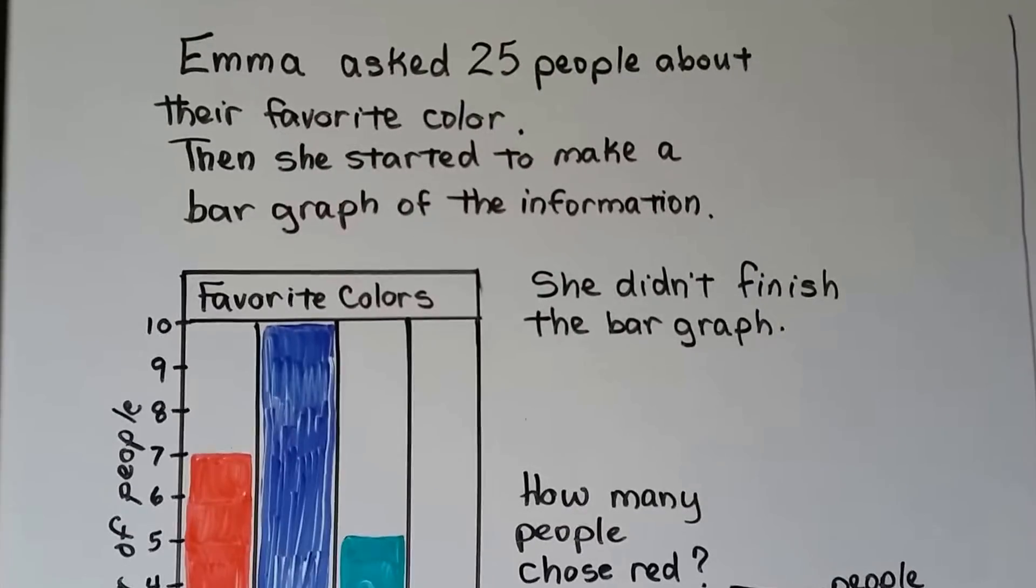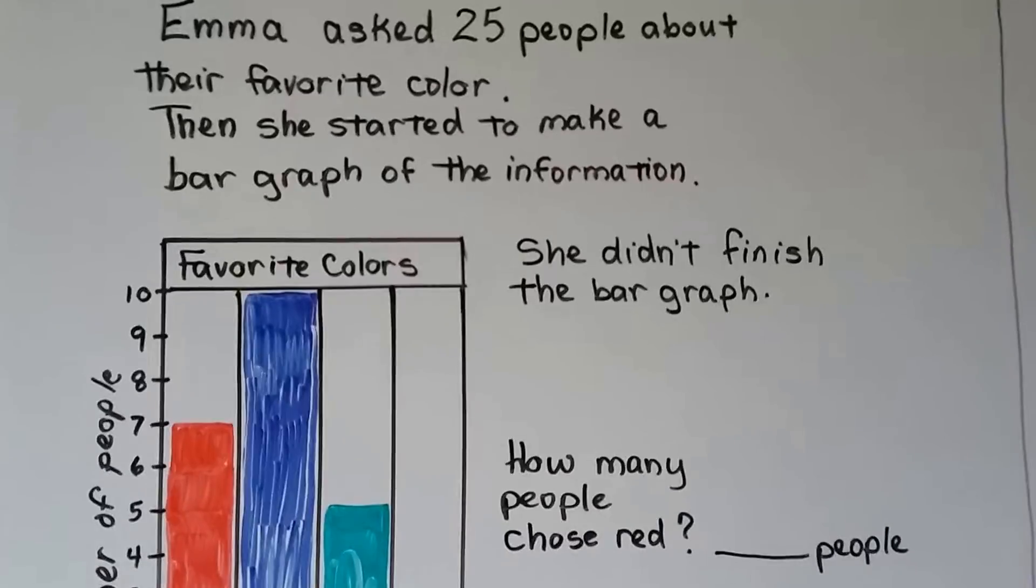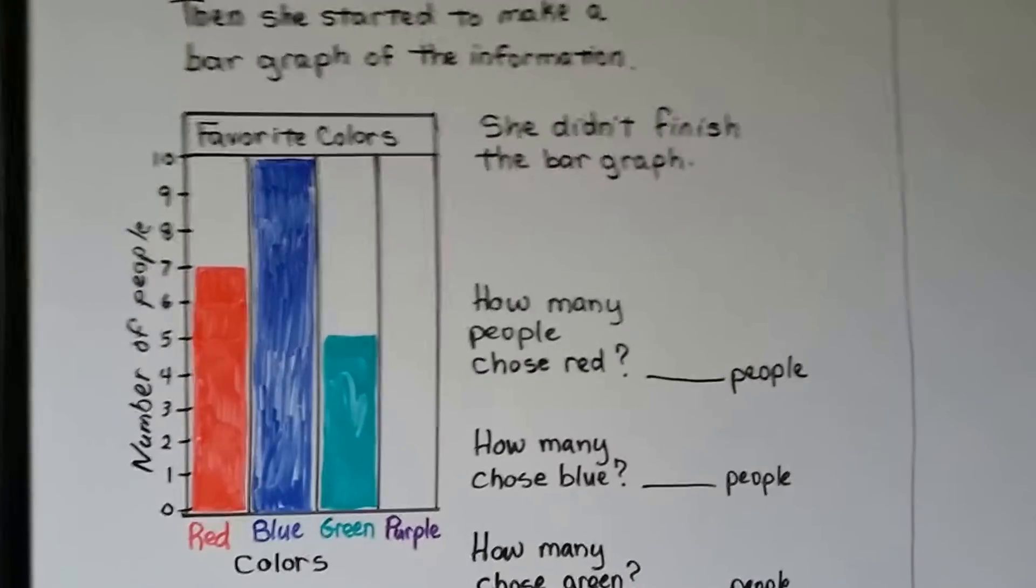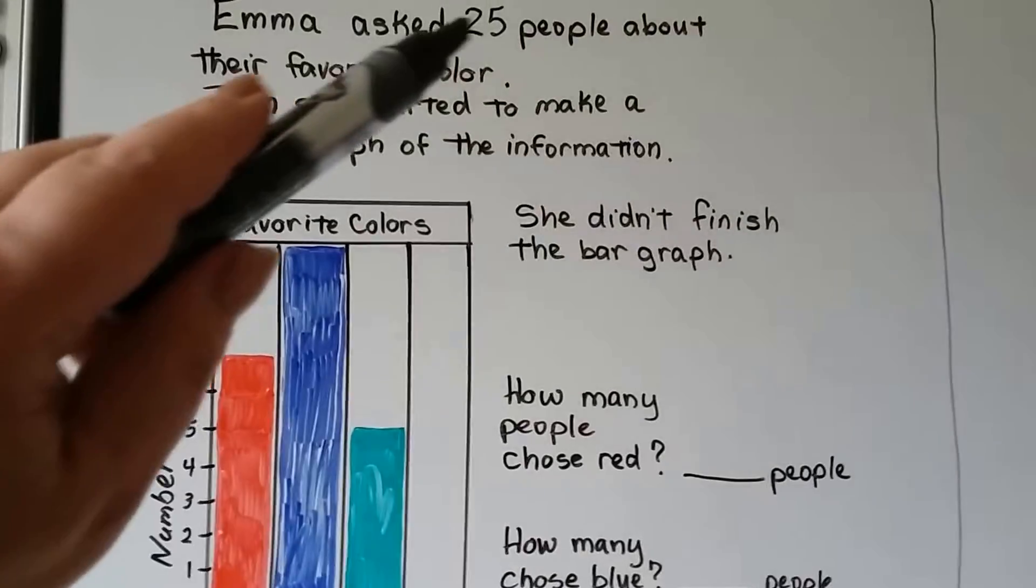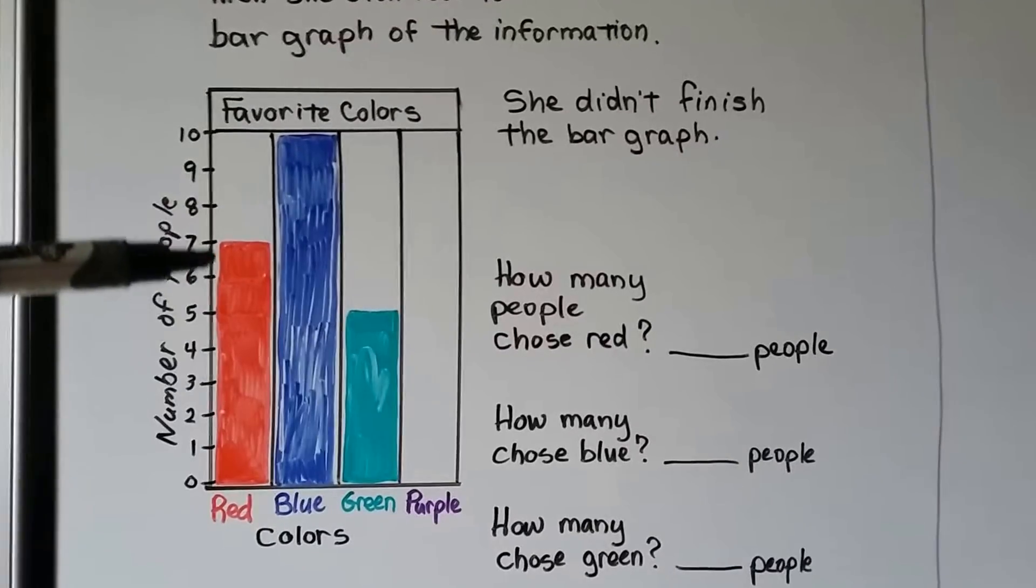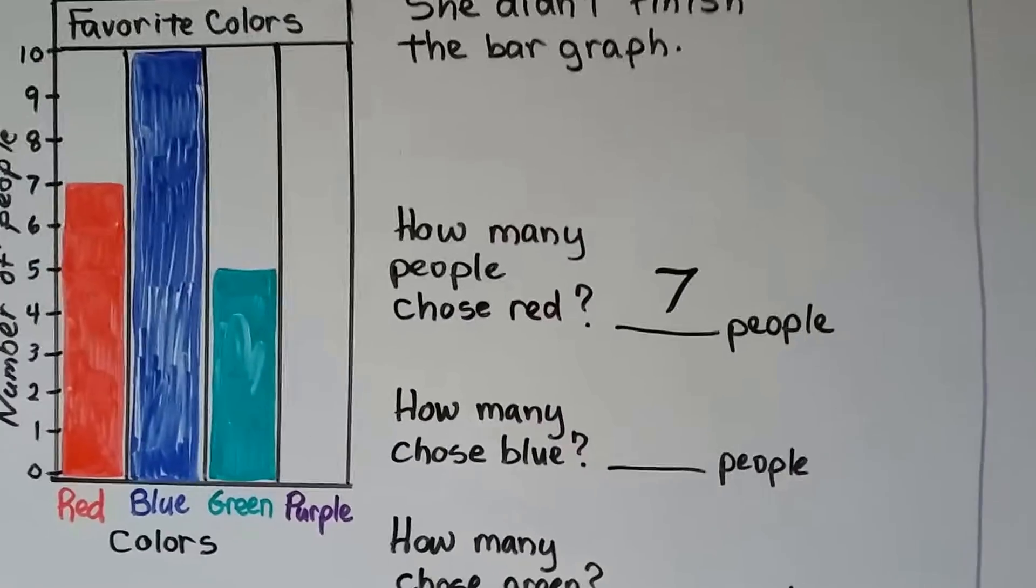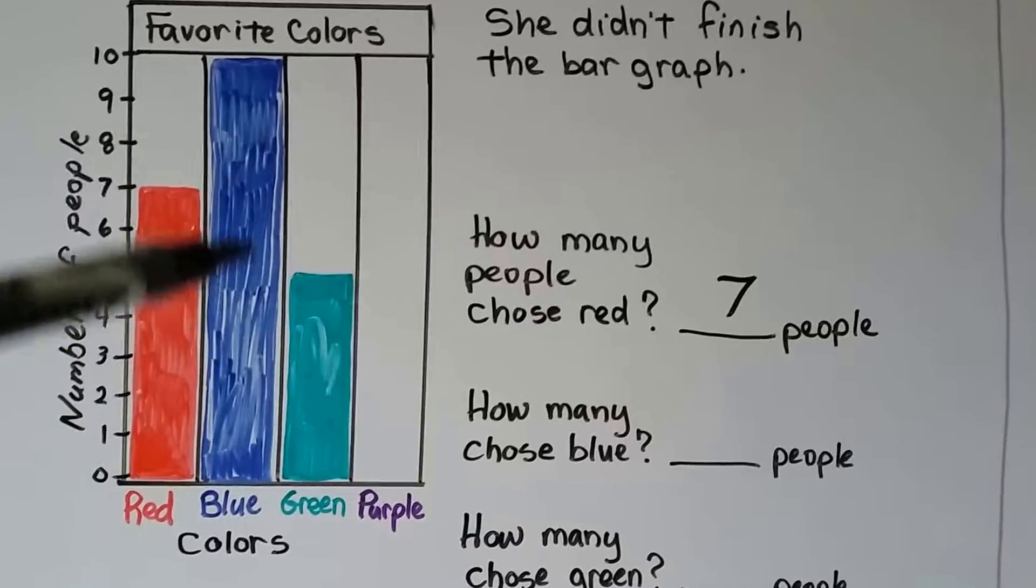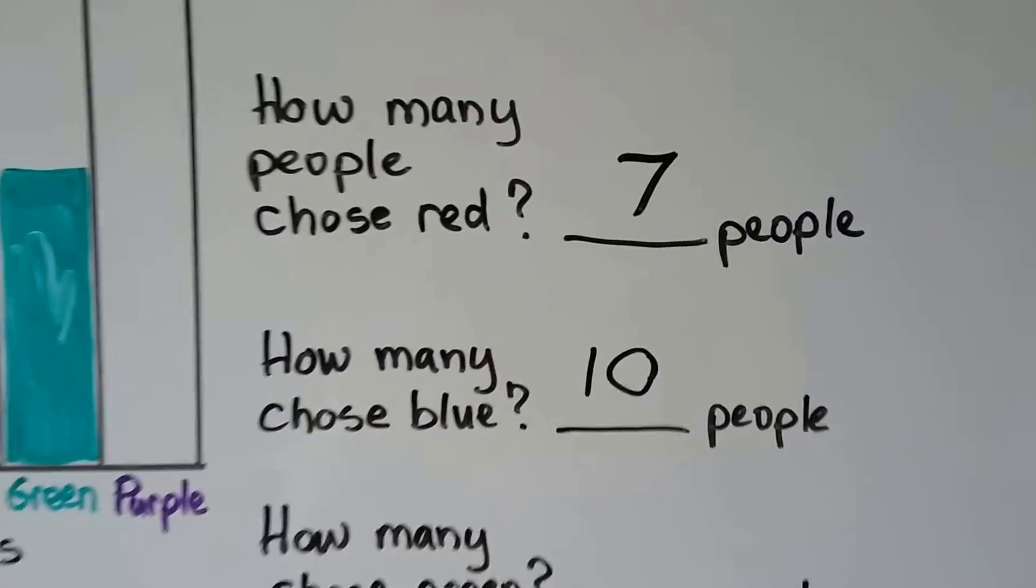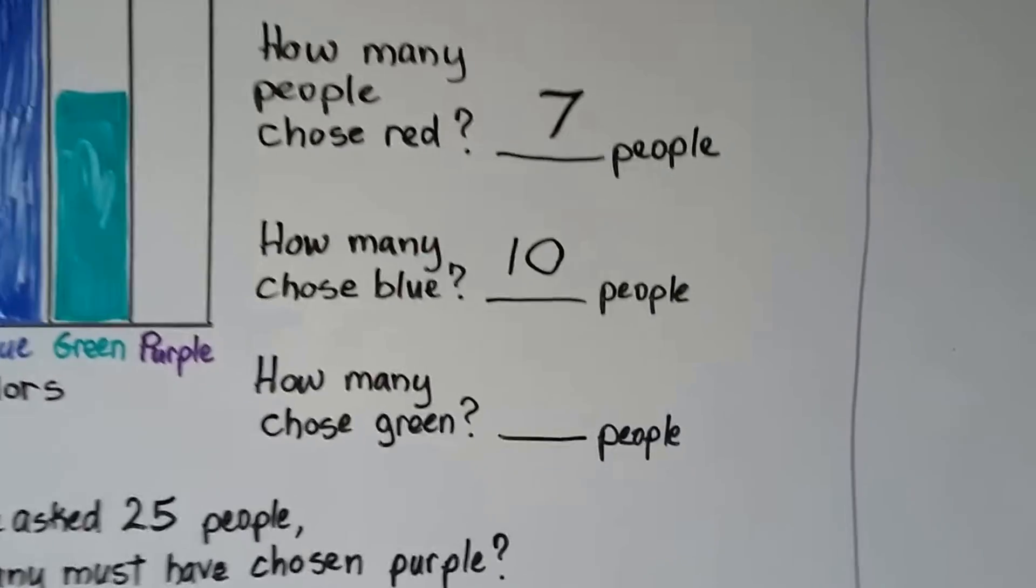Emma asked 25 people about their favorite color. Then she started to make a bar graph of the information. She didn't finish the bar graph. So she started to make it, but she didn't put the answer for how many people chose purple. So we can figure this out because we know she asked 25 people. So how many people chose red? We'll look at red and we follow the bar up and we can see it stops at seven. So we know seven people chose red. How many chose blue? We look at the bar for blue and see it goes all the way to the top to ten. Ten people chose blue. How many chose green? We follow the green bar all the way up. It stops at the five. So we know five chose green.